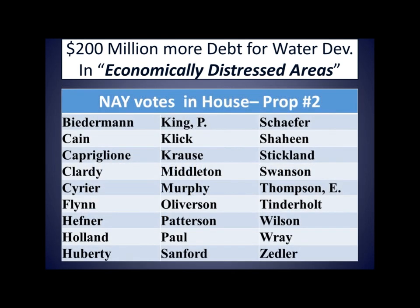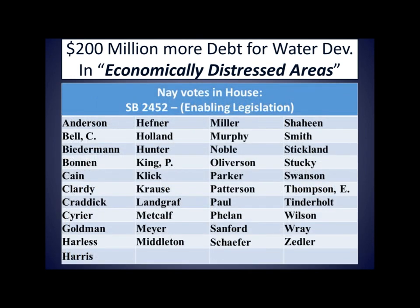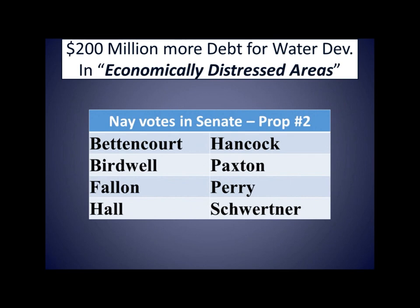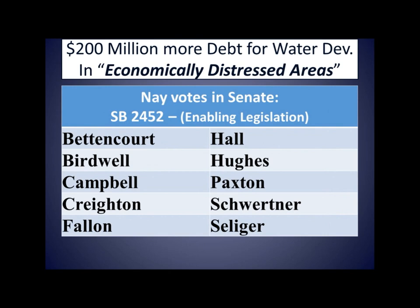Here is the list of nay votes — if your state House representative is not listed, they voted for Proposition 2. Proposition 2 received fair resistance in both chambers. There were 27 nay votes in the House, all Republicans. For the enabling legislation, Senate Bill 2452, there were 41 nay votes in the House, again all Republicans. In the Senate, there were 8 nay votes on Proposition 2 and 10 nay votes on the enabling legislation, all Republicans. This proposed Constitution amendment is the only proposal authored by Democrats; the other nine are from Republicans.